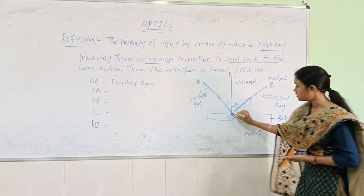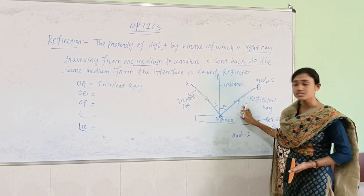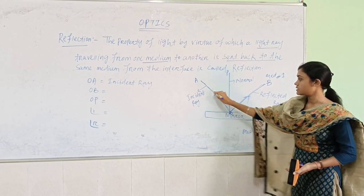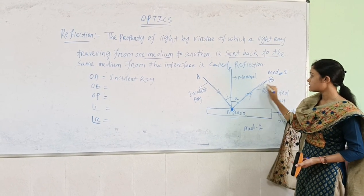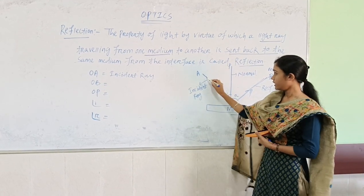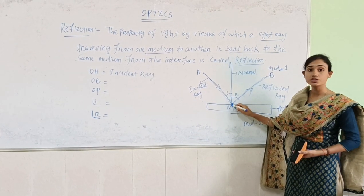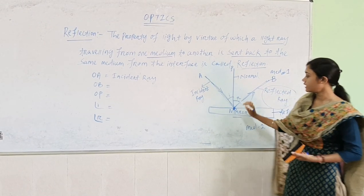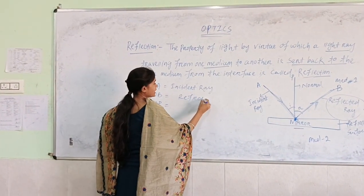The ray that falls on the mirror is sent back to the same medium from which it is generated. Let's say O is our light source. When this ray falls on the mirror surface, at the point of incidence this ray is reflected back — this property is called reflection. The ray which falls on the mirror is the incident ray, and the ray which is reflected back is the reflected ray.